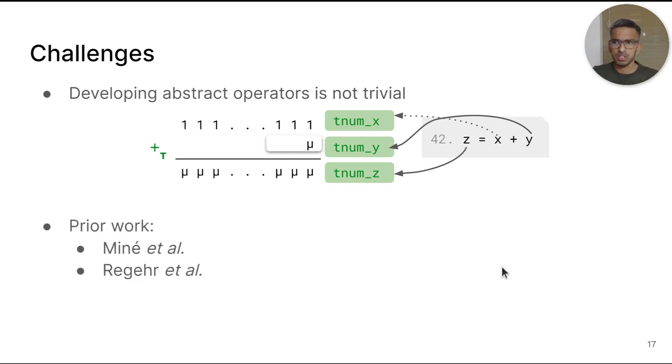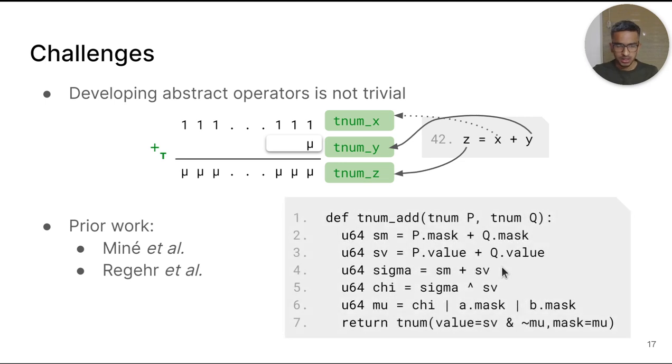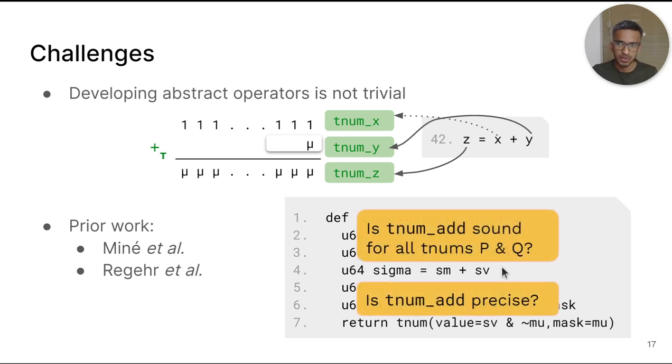Prior work on similar abstract domains like the bitfield domain of Miné and the bitwise domain of Regehr are restricted in that they do not show arithmetic operations or present much slower versions than the corresponding operators presented in the Linux kernel. The Linux kernel does have implementations for arithmetic operators of addition, subtraction, and multiplication. Shown here is the Linux kernel's implementation of TNUM addition, but notably it has no proofs of soundness or precision for them.